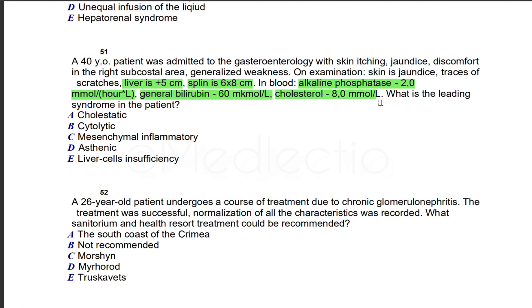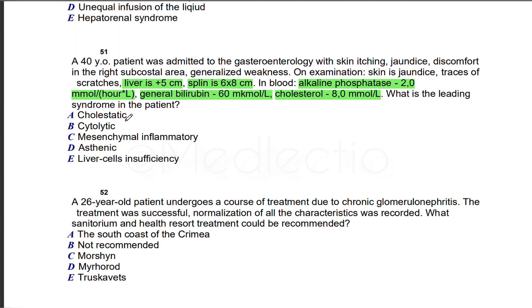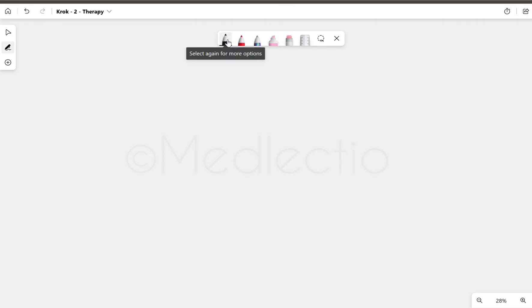Alkaline phosphatase is 2, general bilirubin 60, cholesterol 8. We have options: cholestatic, cytolytic, mesenchymal inflammatory, asthenic, and liver cell insufficiency. We can exclude asthenic, which is a body type, not a symptom. The rest are related to liver and we need to discuss these.